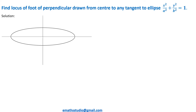These are its axes. Now for this ellipse, I have shown a tangent — so here is the tangent to the ellipse. This is the center of the ellipse, which is at the origin. Now from the center, a perpendicular is drawn to the tangent. Let P be the foot of the perpendicular, and you have to find the locus of point P.